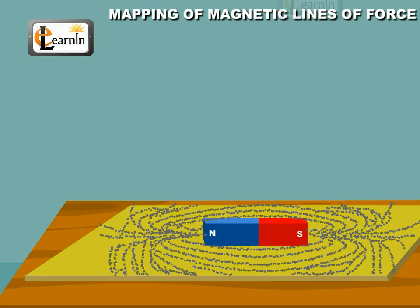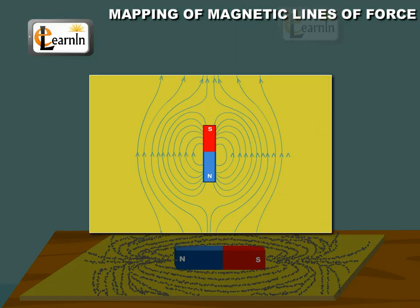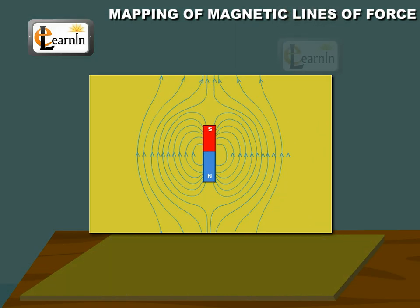The pattern in which these iron filings form a line is the direction of line of force in that area.